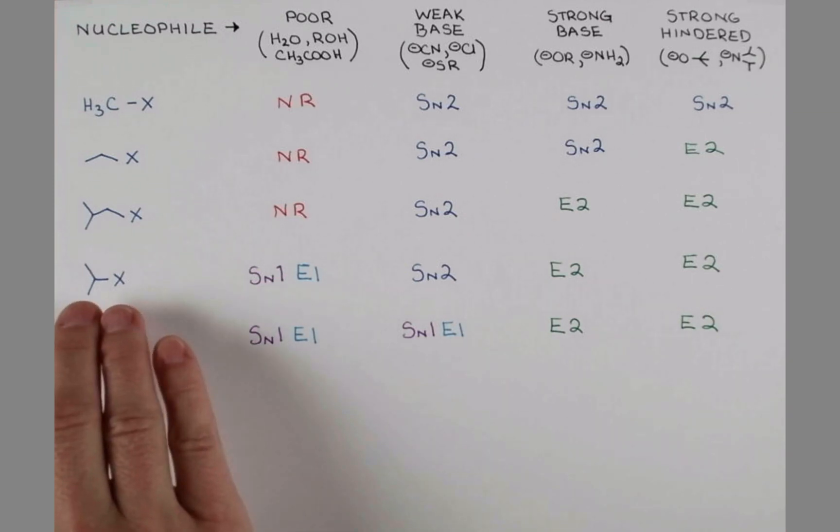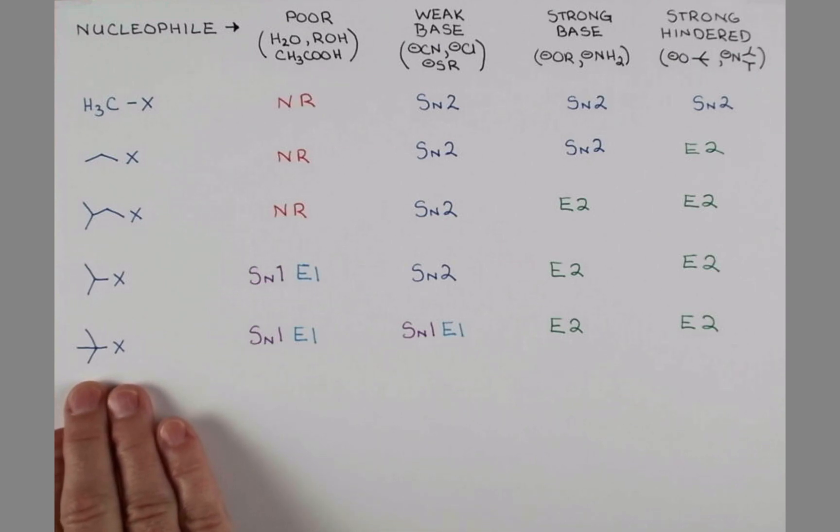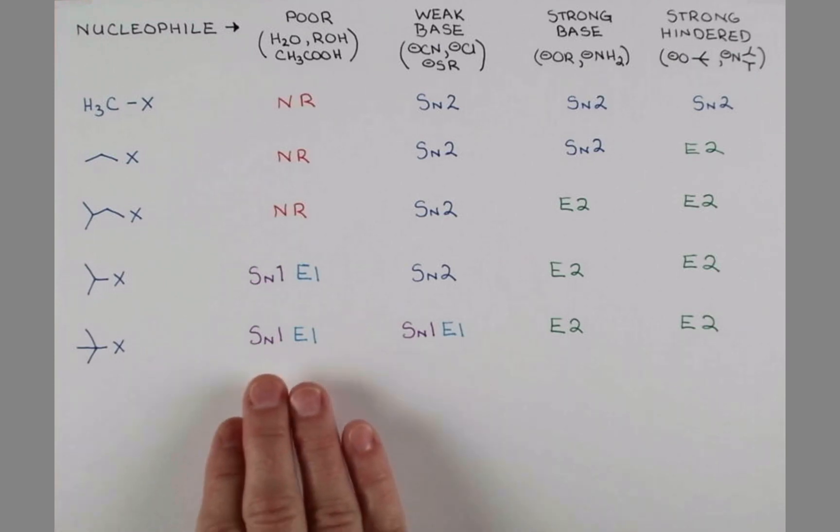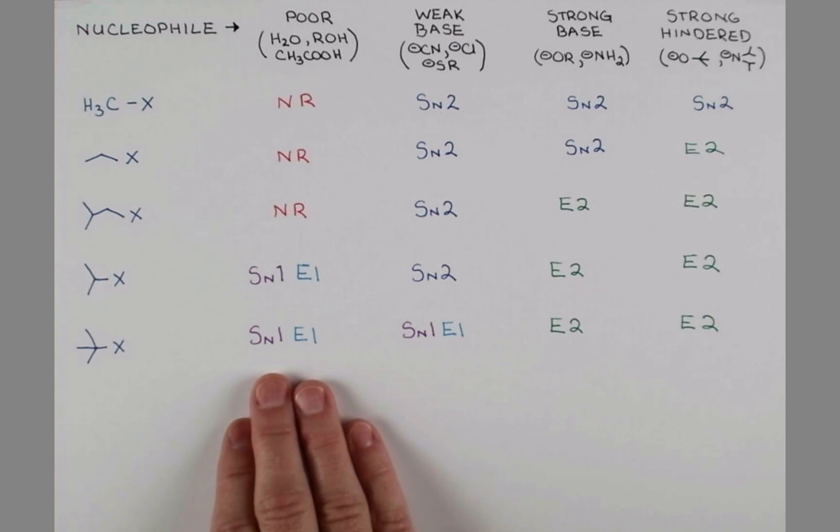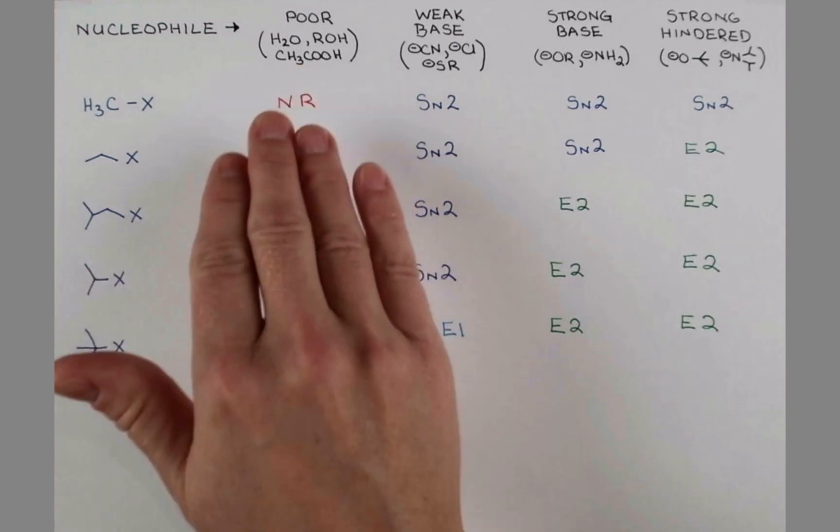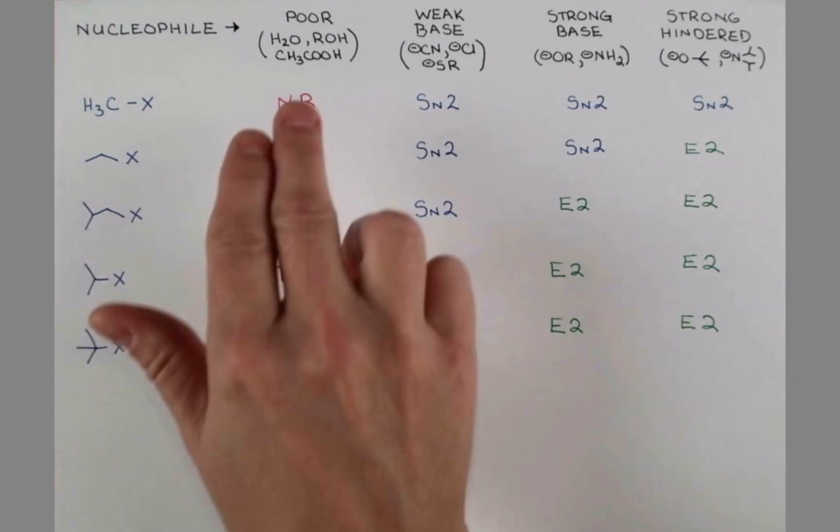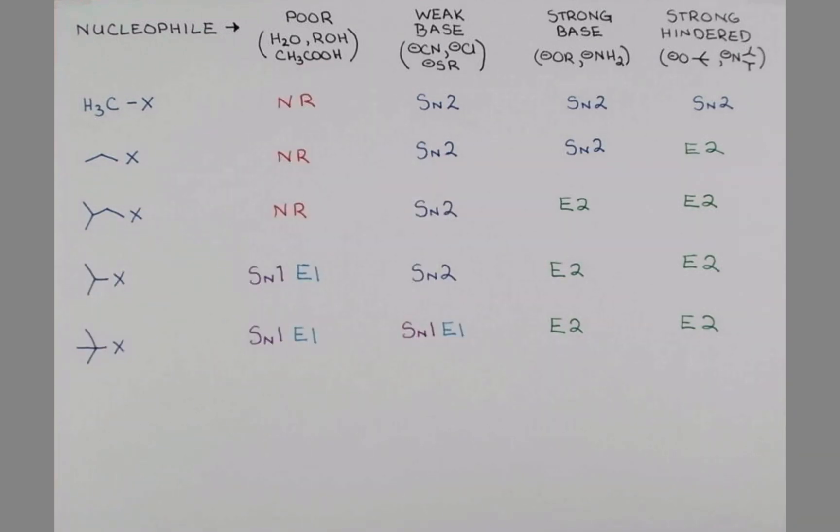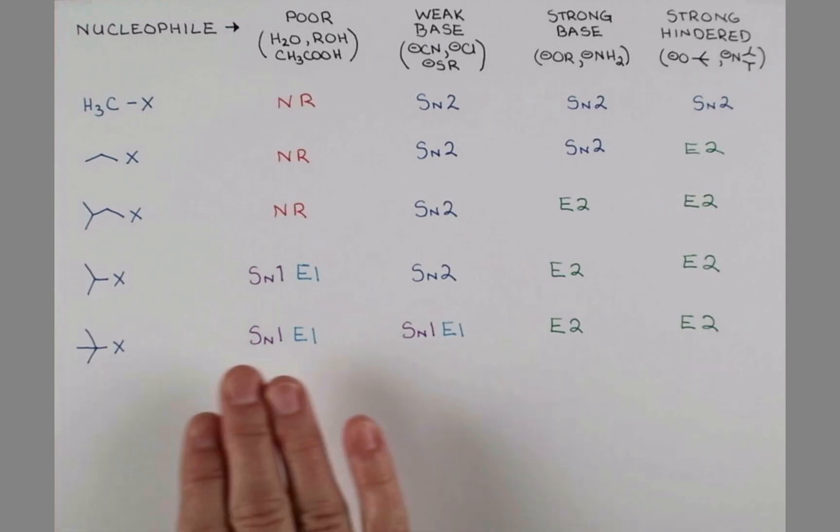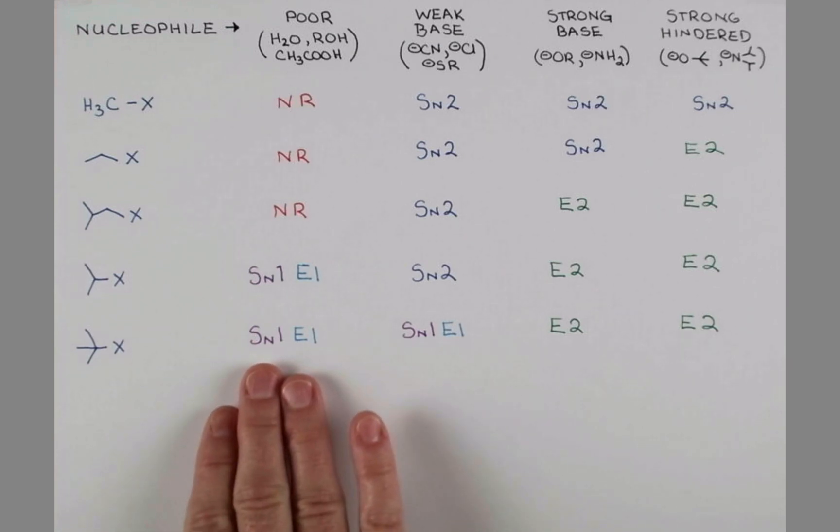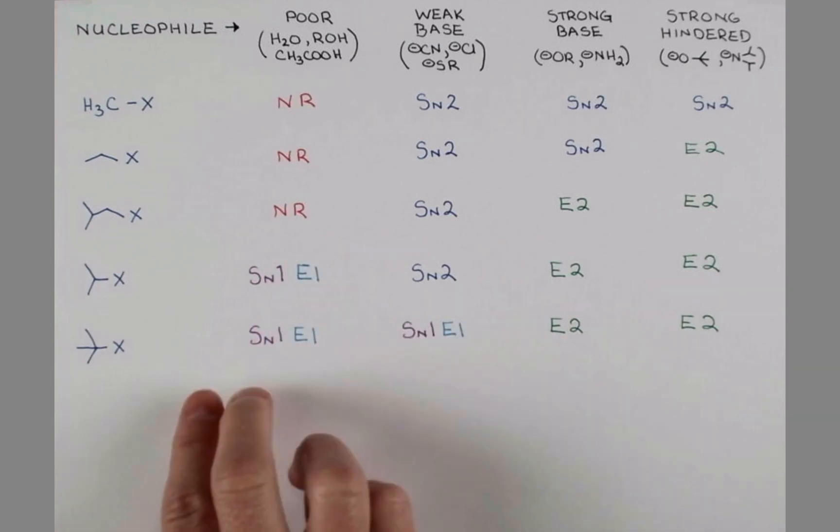Once we can form stable secondary and tertiary carbocations, the SN1 mechanism becomes a choice. Under these polar protic conditions with these weak nucleophiles, the substrate is going to sit around until it ionizes, and then the weak nucleophile can come in and attack. That describes an SN1 mechanism, and E1 competes with that.